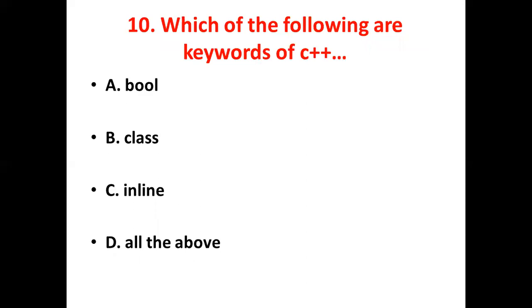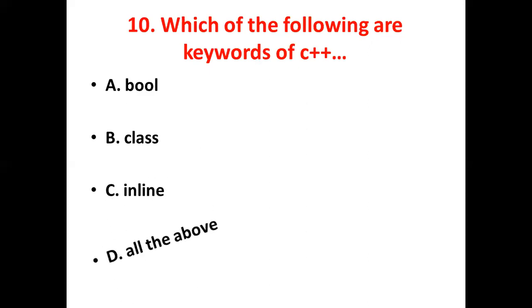Tenth bit. Which of the following are keywords of C++? Option A: Bool. Option B: Class. Option C. Option D: All the above. Answer: Option D, all the above.